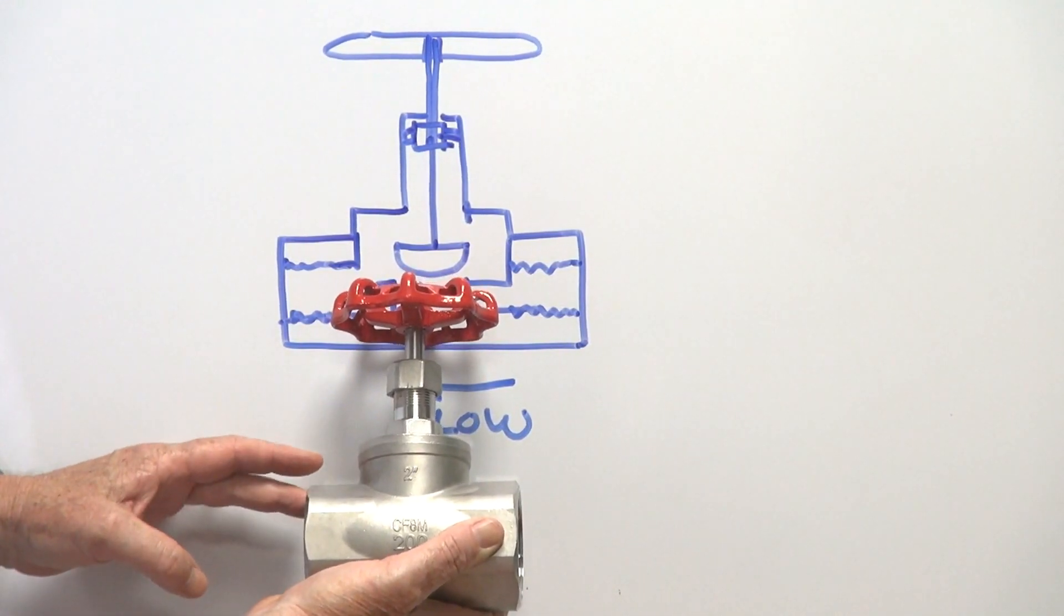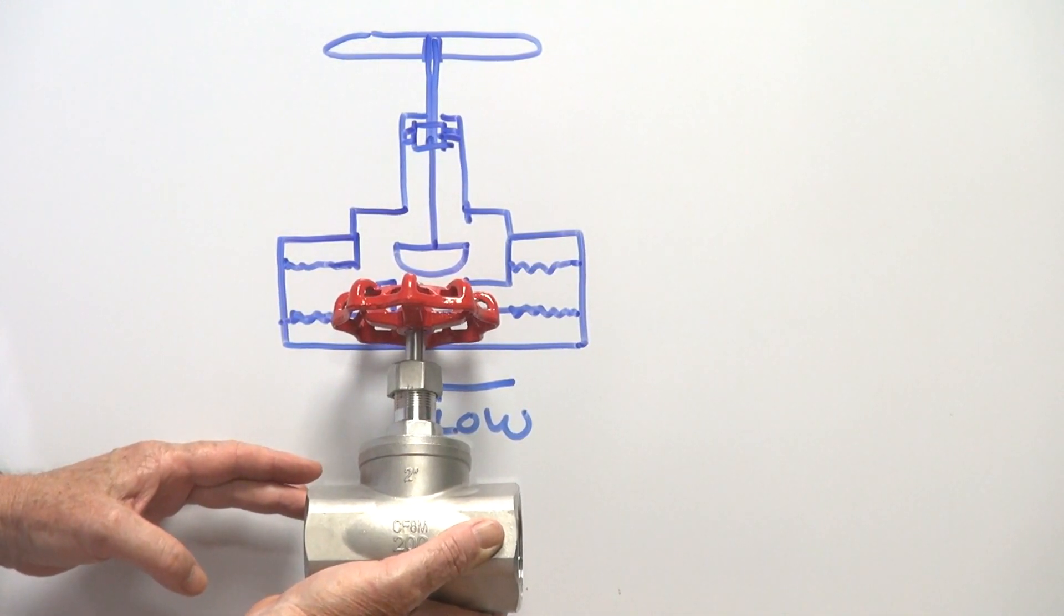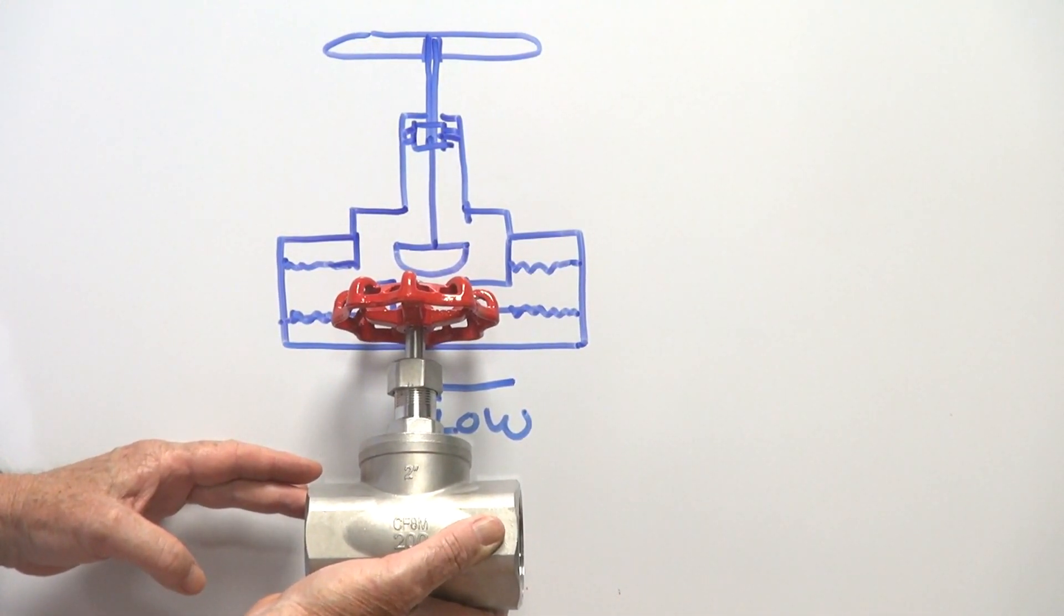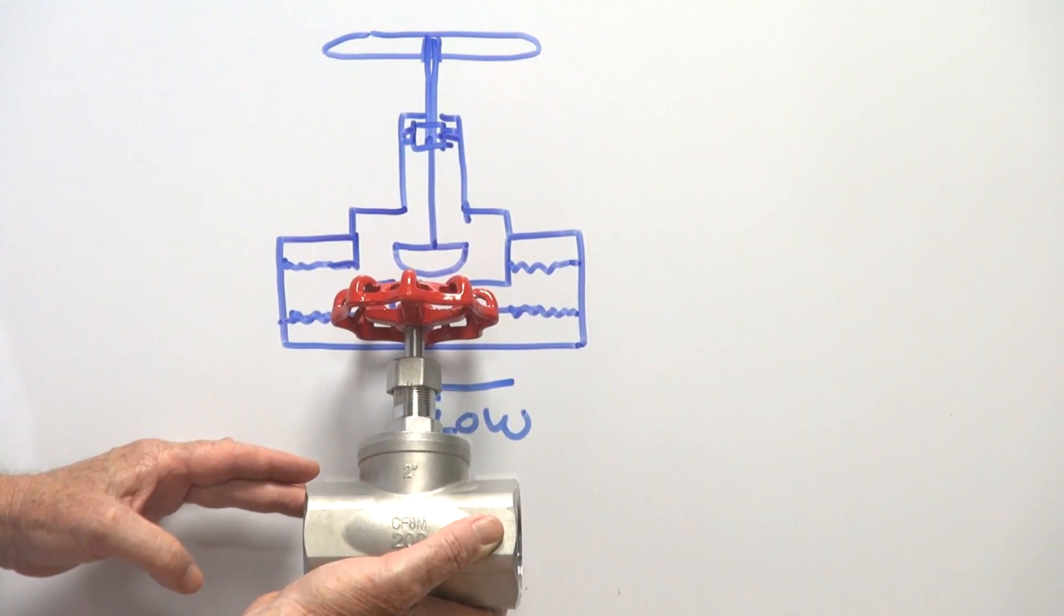They can accommodate steam, petrochemical, various fluids and air that 316 stainless steel can handle.